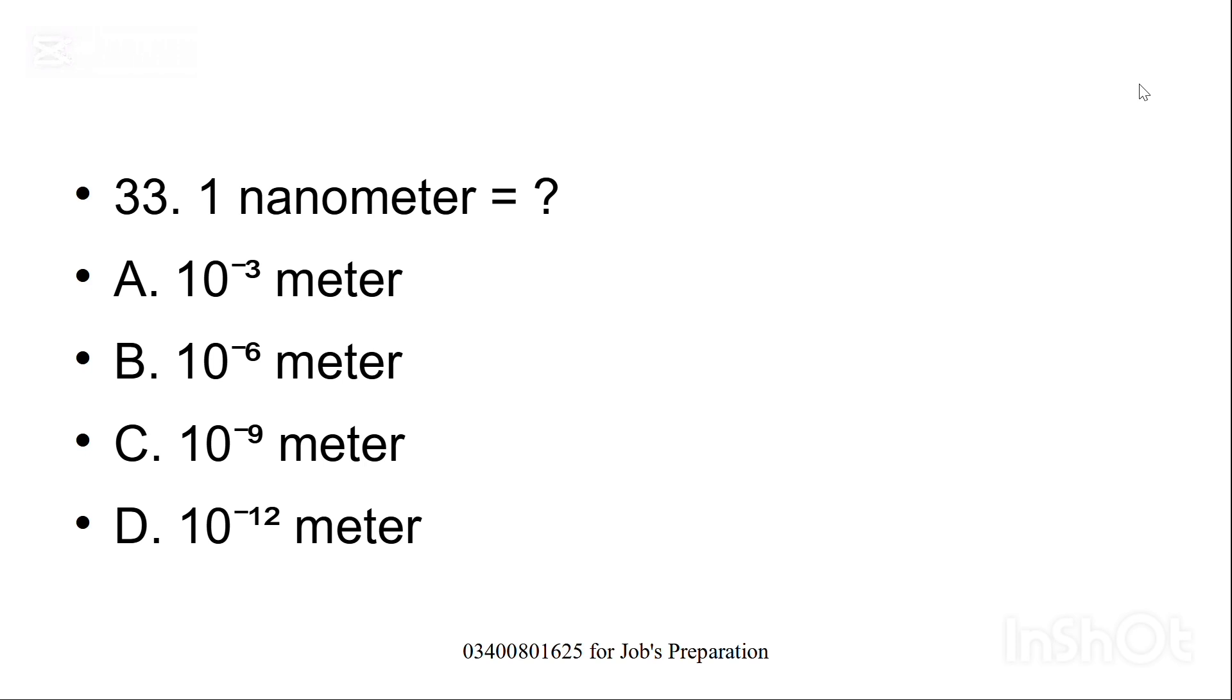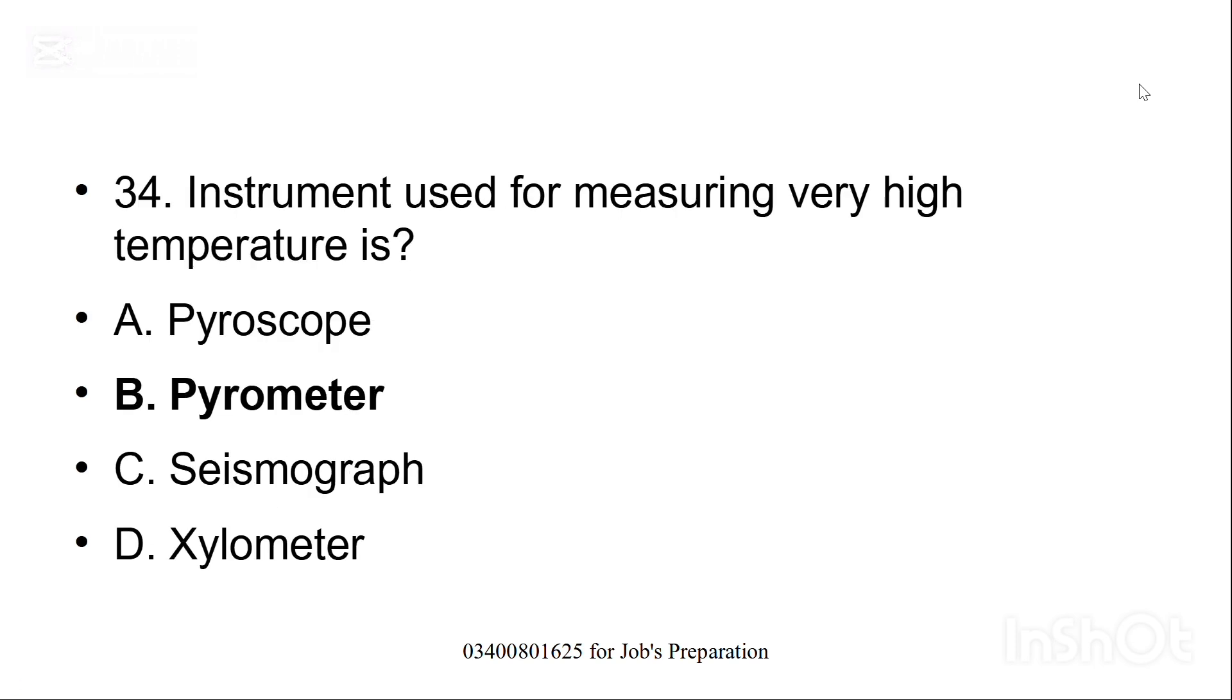1 nanometer equals to 10 raise power minus 9 meters. Option C is the correct option. Instrument used for measuring very high temperature is, option B, pyrometer. Is mein do qisam ke sawal aa sakte hain. Agar aap ko yeh sawal aaye ke measuring very high temperature then pyrometer is the correct option. Jab question aaye ke measuring normal temperature or measuring general temperature then thermometer is the correct option.